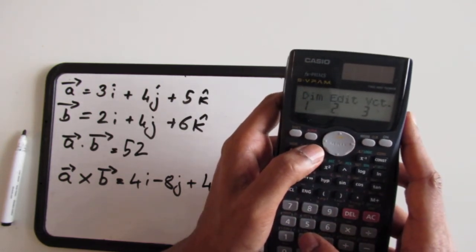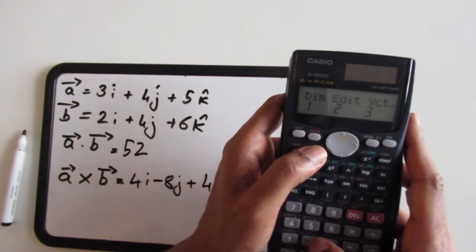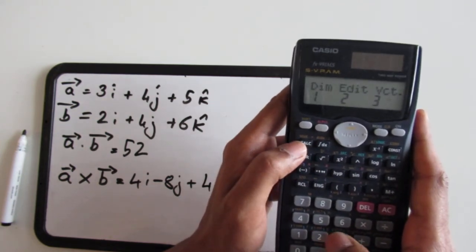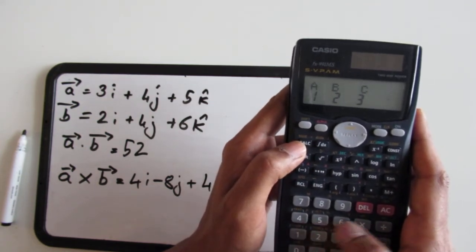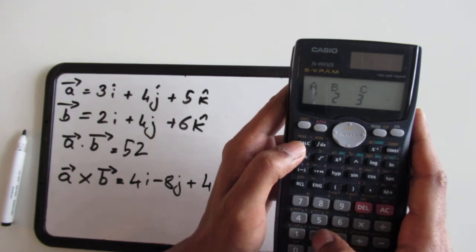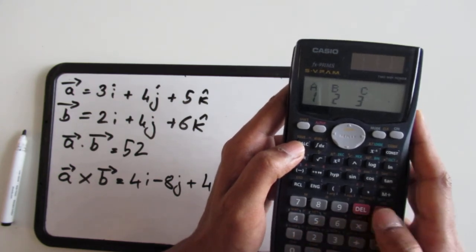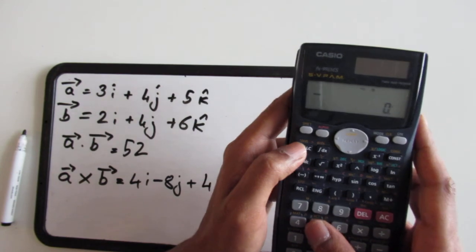If you want to edit any of the values of vector A or vector B, you go to the menu and you click do, and if you select vector A or vector B you can change the values of them. So that is it with vector operations.